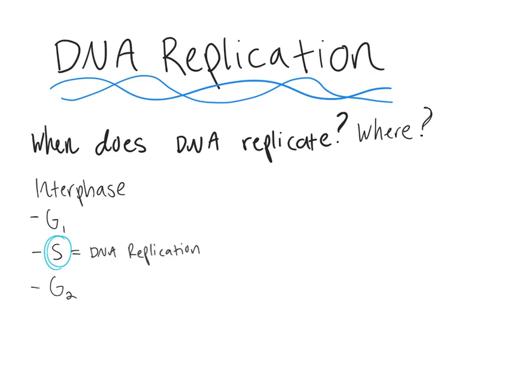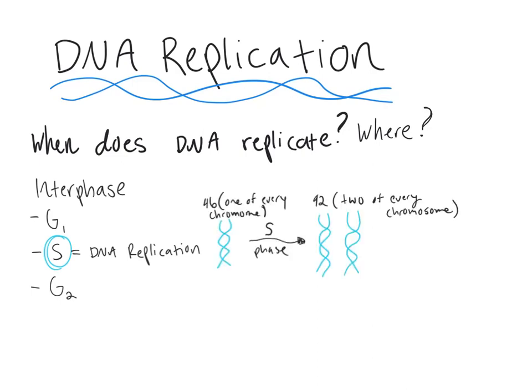In a human being, we have 46 chromosomes, and in S phase every single one is going to replicate or have a copy made. So for every chromosome, you get two. We go from having 46 total chromosomes in our somatic cells to 92 chromosomes total. And because this process deals with DNA, it occurs in the nucleus.